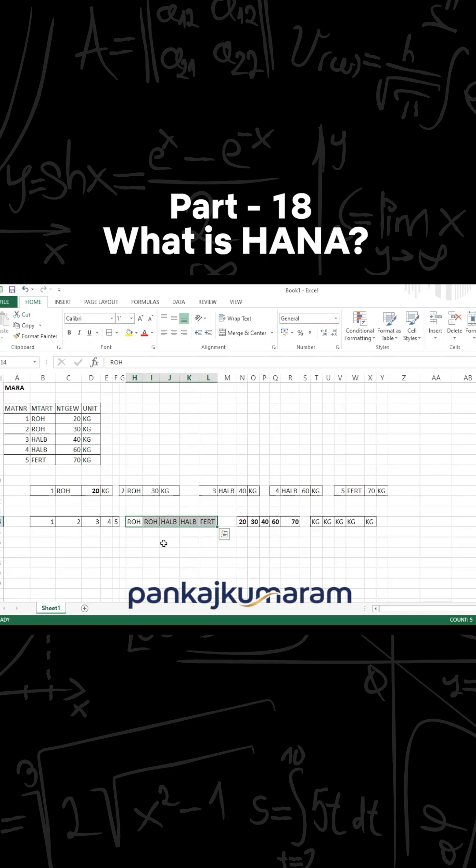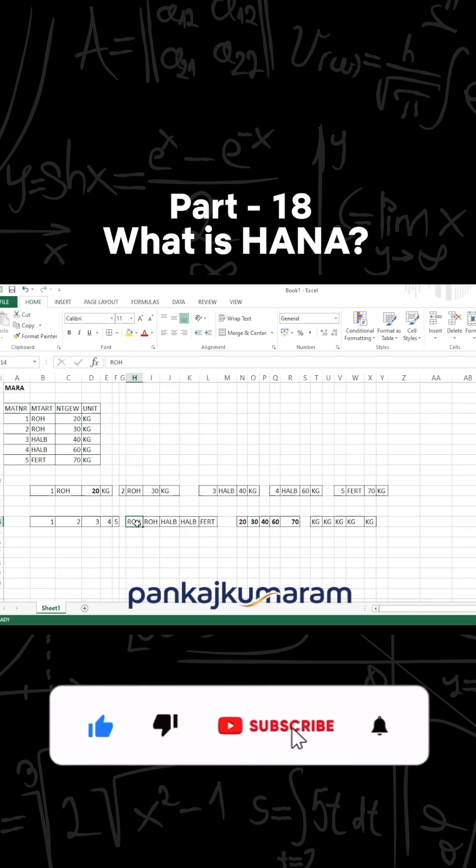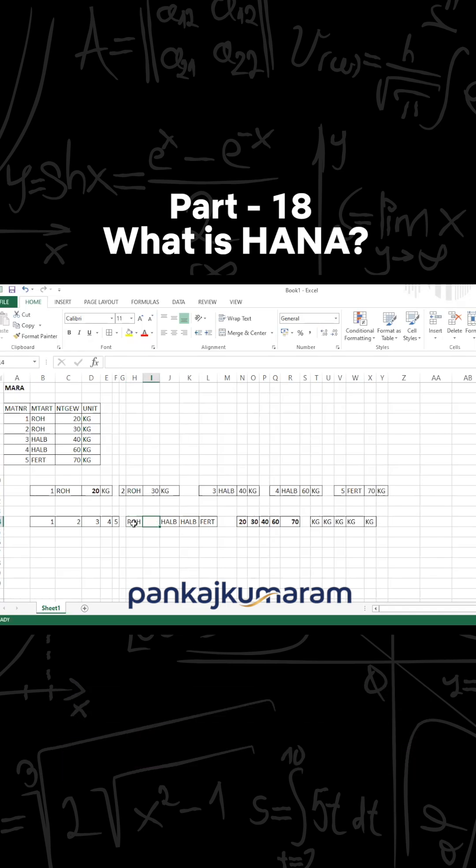Here, how is it possible? It is possible with the help of index table. How index table works: actually, Roh appears two times, so only one Roh will be stored and the index of this Roh will be stored in the index table. At the first place and second place it is there, so here the index will be 1 comma 2. For Halb, 3 and 4 will be the index.